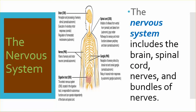The nervous system includes the brain, spinal cord, nerves, and bundles of nerves.